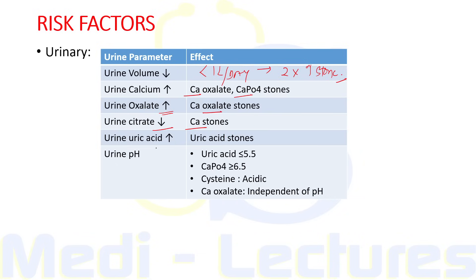Increased urine uric acid leads to uric acid stones. Regarding urine pH: uric acid stones usually form in acidic pH less than 5.5; calcium phosphate stones form at pH greater than 6.5; cystine stones are also formed in acidic urine; and calcium oxalate stones, the most common type, are independent of pH.